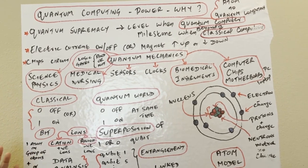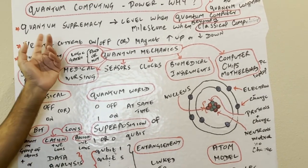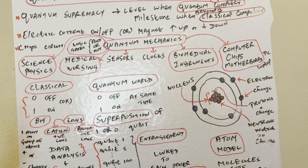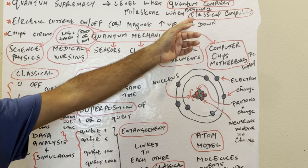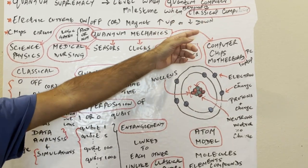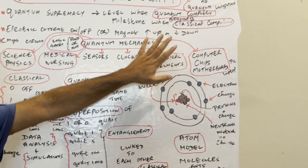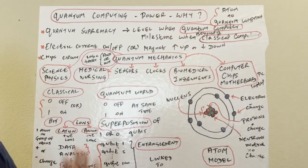Quantum supremacy supreme means extreme level. So nowadays all companies are building a computer to reach the quantum supremacy. That means that's a level or milestone where it's much better than the classical computers. Something cannot be done in classical computers or very slow, this will achieve it quantum computers, that is the supremacy.